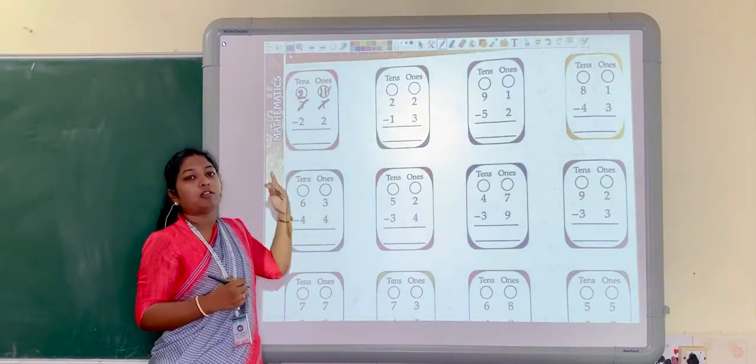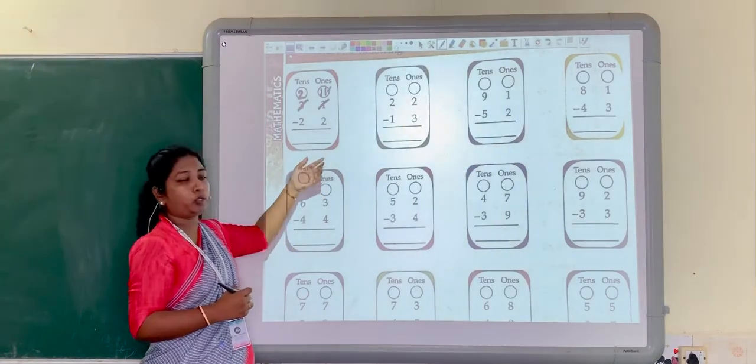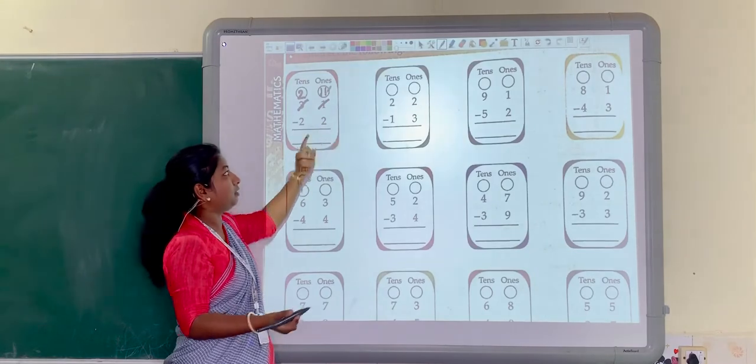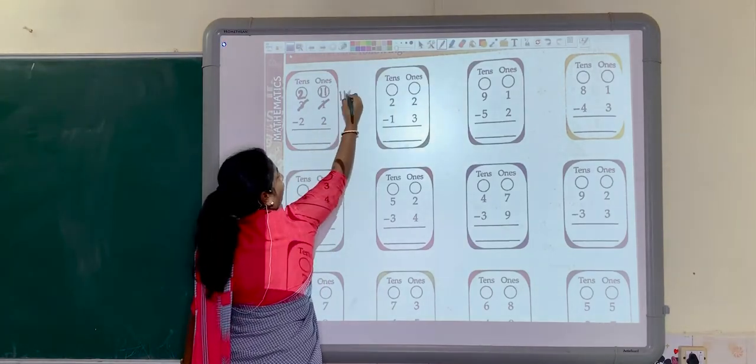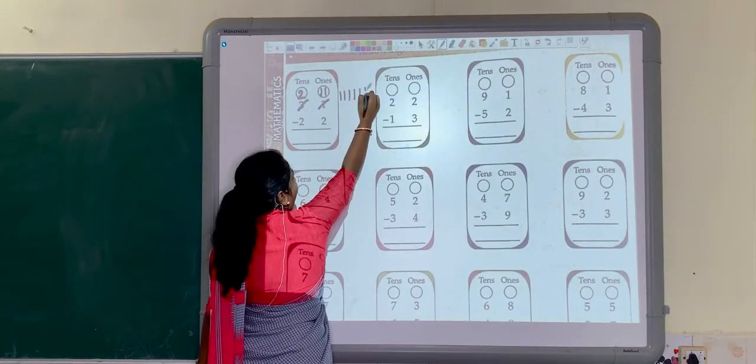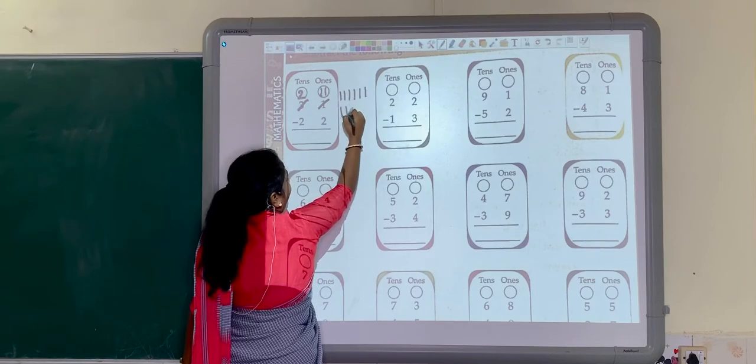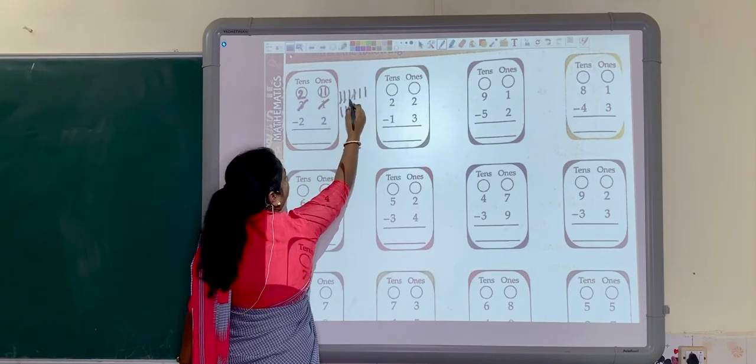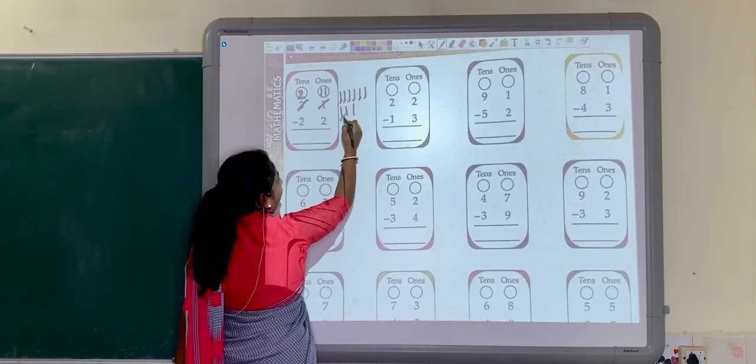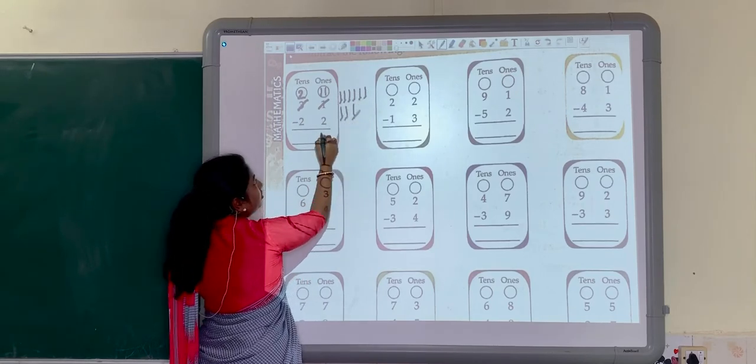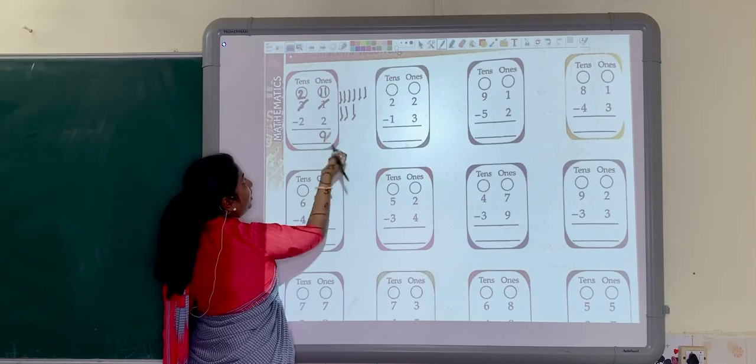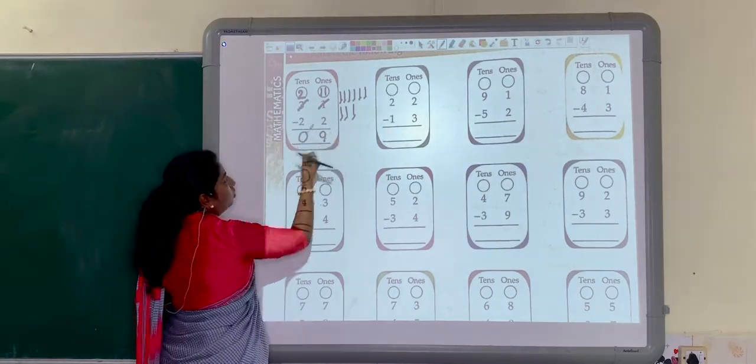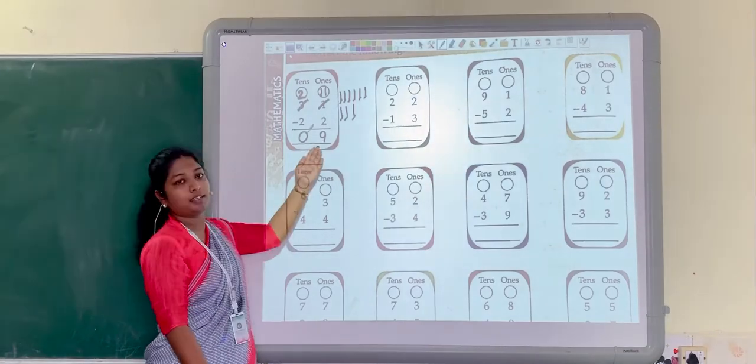I showed you how to solve it already. After 2, start counting: 3, 4, 5, 6, 7, 8, 9, 10, 11. So, how many lines are there now? 1, 2, 3, 4, 5, 6, 7, 8, 9. So, answer is 9 here. And here, 2 minus 2, 0. We got answer 9.